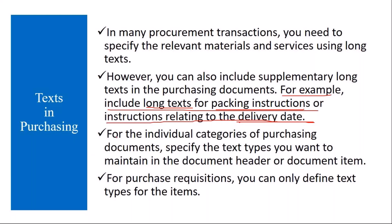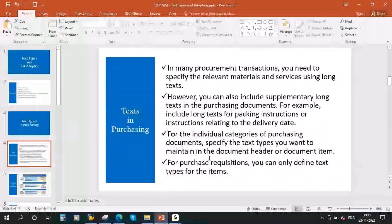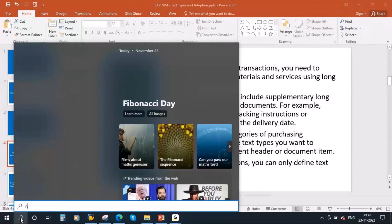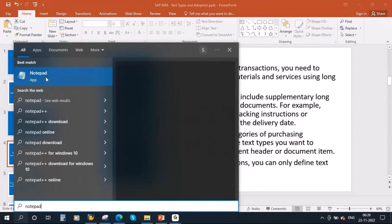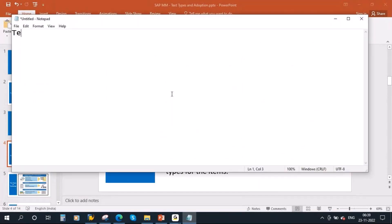For the individual categories of purchasing documents, you specify the text types you want to maintain in the document header or in the document item. Normally you will have text in two places — in the header and in the item. I will show you this in the S4HANA system.